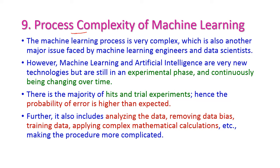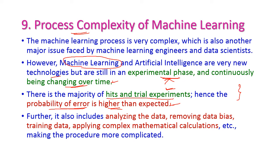The next issue is process complexity in machine learning. Though machine learning and artificial intelligence are dominating current technologies, they are still in an experimental phase and continuously changing over time. The maximum of algorithms are only on a trial and error basis, and the probability of error rate is higher than expected because there is no fixed model. It also includes analyzing the data, removing data bias, training data, and applying complex mathematical calculations, making the procedure more complicated.